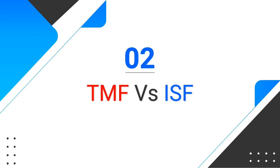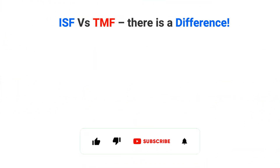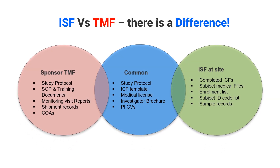Now let us understand the distinction between a Trial Master File and the Investigator Site File. A lot of people use these terms interchangeably, but please be aware there is a clear difference. The Trial Master File is located with the sponsor, whereas the ISF is located at the site. Importantly, an ISF is a subset of a TMF — whatever documents are in the TMF, a subset can be found in a particular ISF.